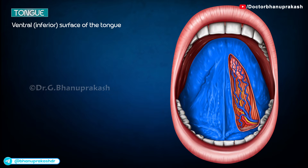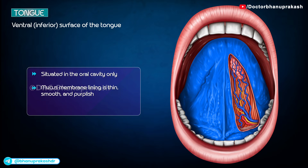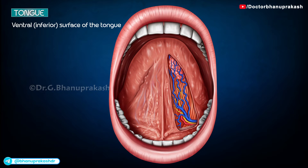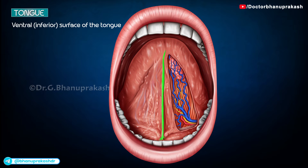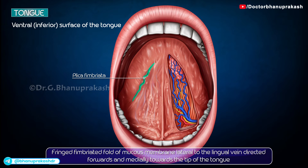The inferior surface of the tongue is located only in the oral cavity. The mucous membrane here is thin, smooth, and purplish; it is reflected onto the floor of the mouth. It presents with the frenulum linguae, a median fold of mucous membrane connecting the tongue to the floor of the mouth; deep lingual veins, visible through the mucous membrane on either side of the frenulum; and the plica fimbriata, a fringed fold of mucous membrane lateral to the lingual vein, directed forwards towards the tip of the tongue.